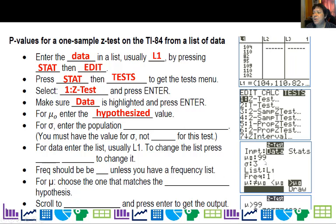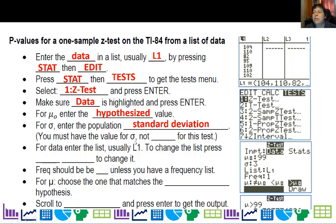For the mean mu-naught, you're not going to put the sample mean — you're going to put in the hypothesized value, which was 99. For sigma, you have to put in the population standard deviation. If you don't have sigma, then you're not doing the right test — you probably need to do a t-test if you don't have sigma. S won't work here; we need sigma for the population standard deviation. For data, enter the list, which is usually L1. To change a list, you can press SECOND, STAT, and LIST.